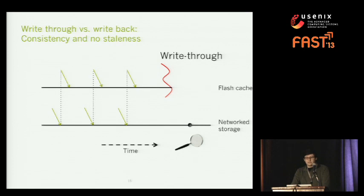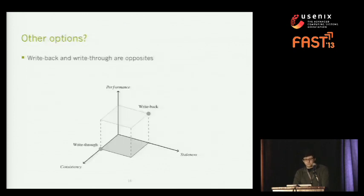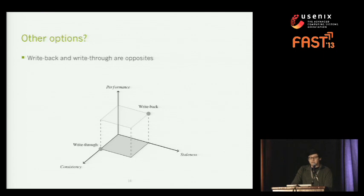In the case of write-through, we wouldn't have this problem since network storage writes are done synchronously with writes to the flash before notifying the application. If we were to plot these two write policies on a 3D plot with three dimensions, write-through fits at one extreme: slow, provides consistency, and has no staleness. On the other side, write-back is faster, has no consistency guarantees, and has some staleness.